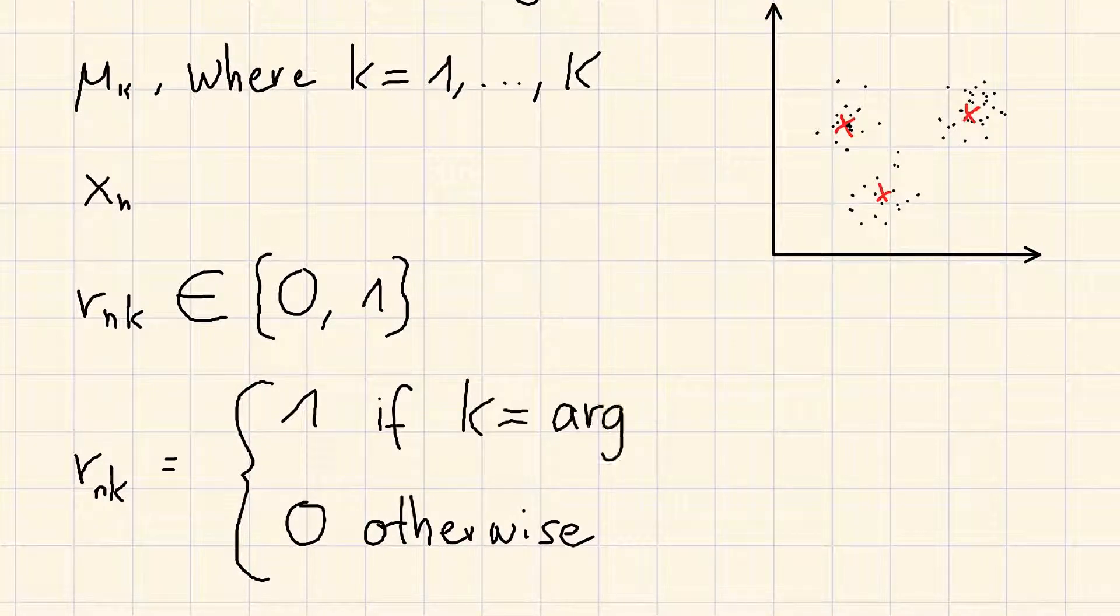rnk equals 1 if k is the argmin over j of the squared distance ||xn - µj||². Otherwise, rnk equals 0.